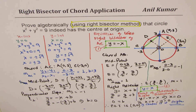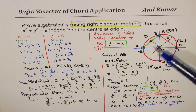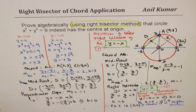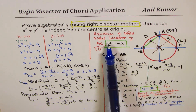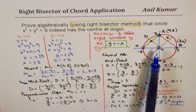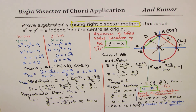In this question, we showed that the right bisectors of any two chords meet at a point, and that point is the center of the circle — here it is the origin. The equations of the right bisectors were y = −x and y = x, and their common point is (0, 0). Therefore, the center of the circle x² + y² = 9 is indeed the origin. I hope you understand and appreciate the method. Feel free to write your comments, and if you like and subscribe to my videos, that'd be great. Thank you and all the best.